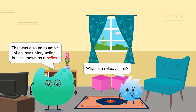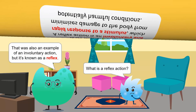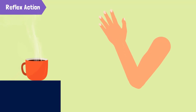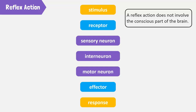But it's known as a reflex. What is a reflex action? A reflex action is an involuntary and rapid response to a stimulus. This happens in order to minimize the damage to the body from potentially harmful conditions. For example, moving your hand away instantly from a hot object. A reflex action follows this general sequence and does not involve the conscious part of the brain. This is why the response is so fast.